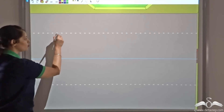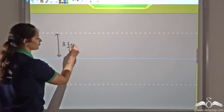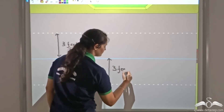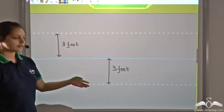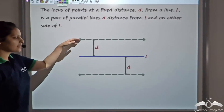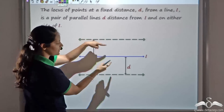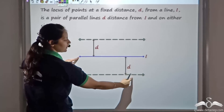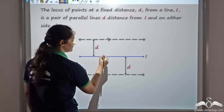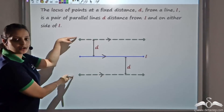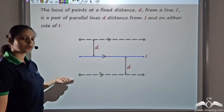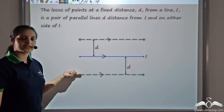Two straight lines parallel to this line L. When all the points move three feet away from a fixed line — three feet on both sides — we get two parallel lines which are parallel to this given line L. That is the locus of all such points that are at a fixed distance D away from this line on either side gives you a straight line on either side, at a fixed distance away from line L, and all these lines are parallel. So you get a pair of parallel lines on either side, a fixed distance D away from the given line.